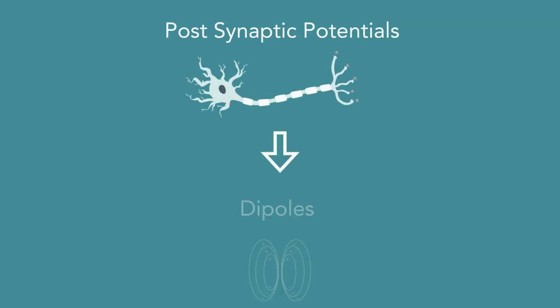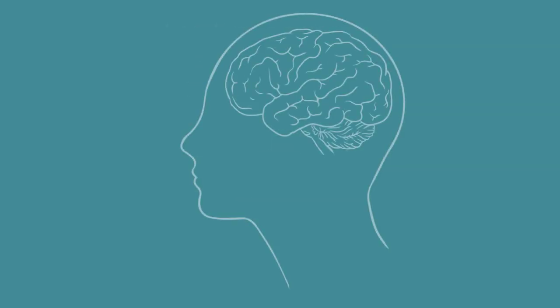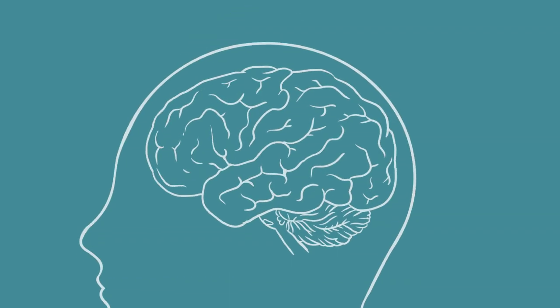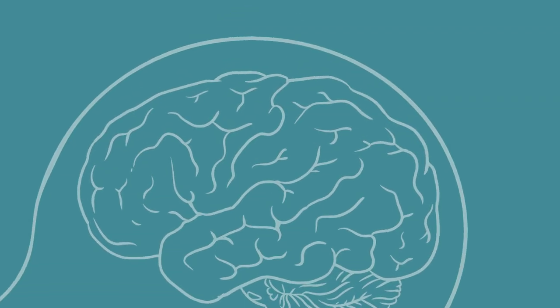In the previous two videos, we discussed how postsynaptic potentials generate dipoles. This electrical activity forms the basis of EEG recordings. In this video, we will walk through how these dipoles are summed together in order to be read by sensors at the scalp.